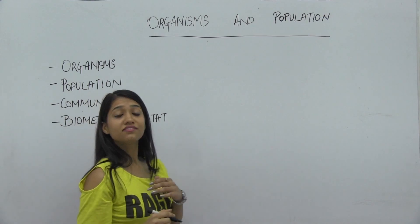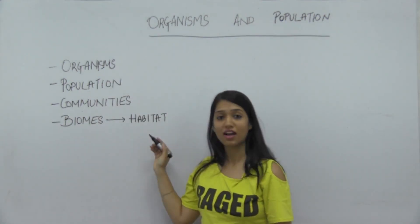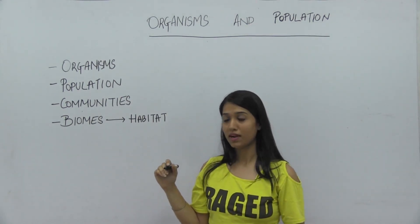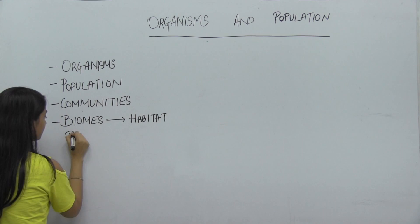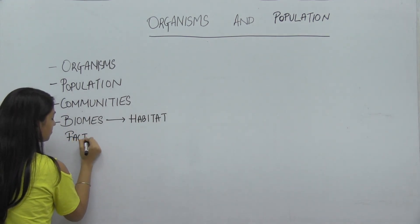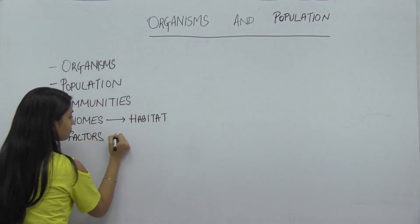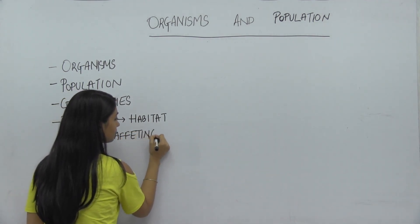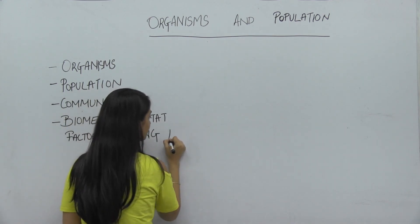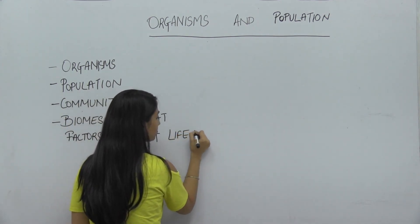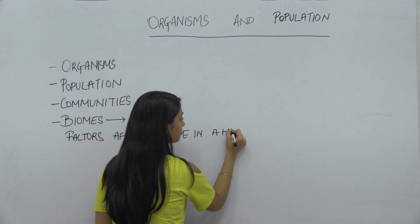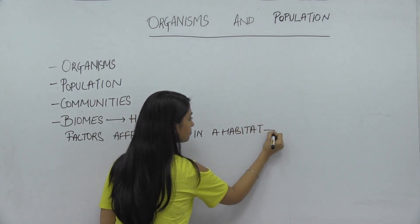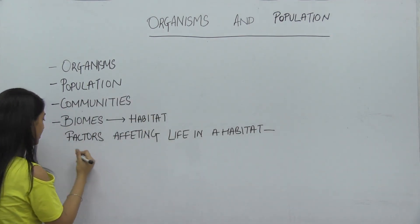There are certain factors that affect the life of a habitat. They may be abiotic or biotic. The biotic factors are the living organisms — they can be parasites, predators, and competitors.